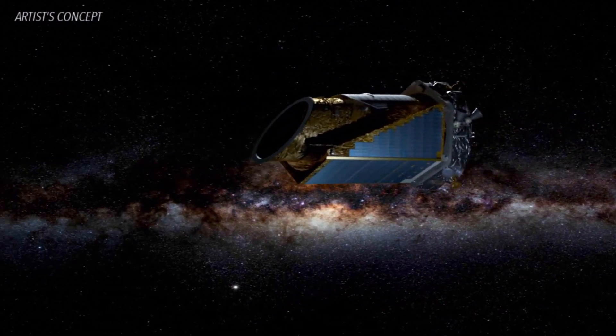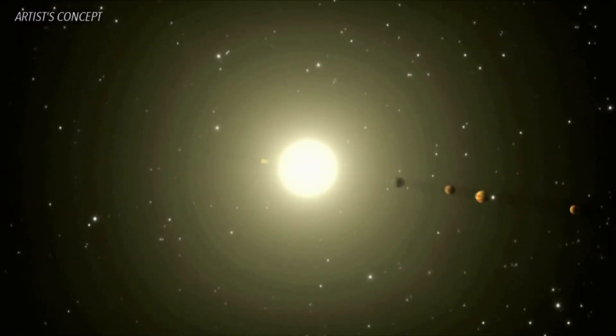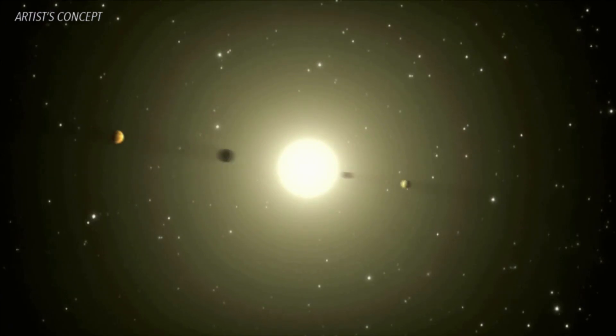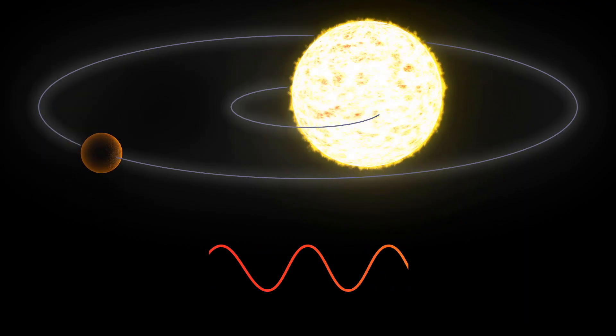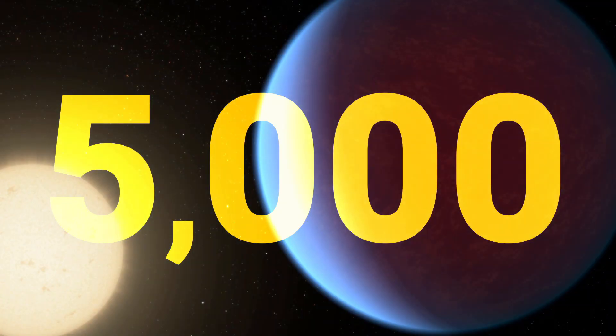Since 2009, the Kepler Space Telescope, which uses the transit method to discover planets, along with other methods like gravitational microlensing, radial velocity, and direct imaging have aided in the discovery of over 5,000 exoplanets.